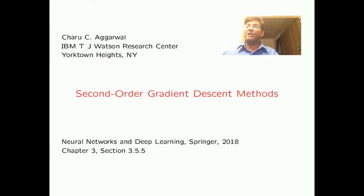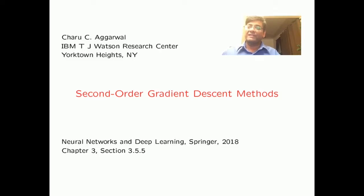In this video, we will discuss second-order methods for neural network learning. In second-order methods, we use the second-order partial derivatives of the loss function with respect to the weights. The second-order derivative gives very useful information about the curvature of the loss function. By using an appropriate trade-off between the steepest descent direction and directions of low curvature, it is possible to obtain better descent directions requiring fewer steps for convergence.